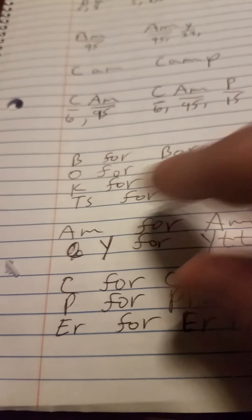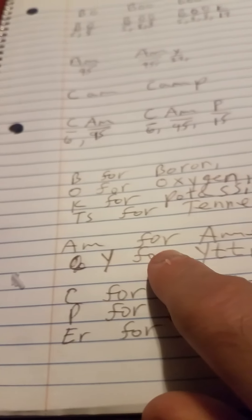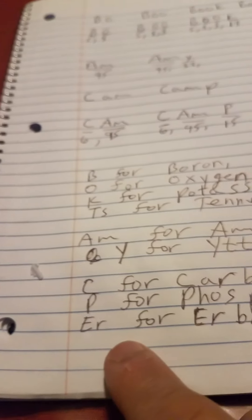B is for boron. O is for oxygen. Capital K is for potassium. Capital T and a small S is for Tennessine. Capital A and a small M is for Americium. Capital Y is for Yttrium. Capital C is for carbon. Capital P is for phosphorus. And capital E and a small R is for Erbium.